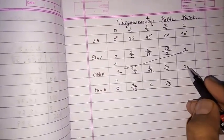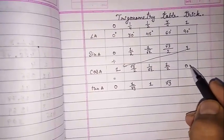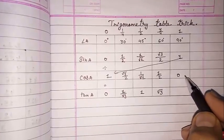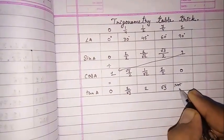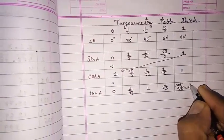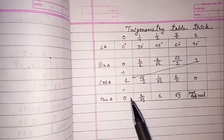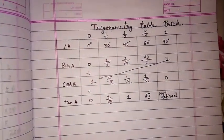Now 0 by 1 we know, but 0 cannot come in the denominator. If it does, that number cannot be defined, so we take it as not defined. This way we can easily remember this trigonometric table trick. Thank you.